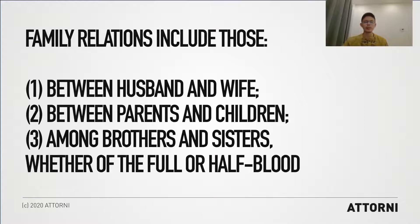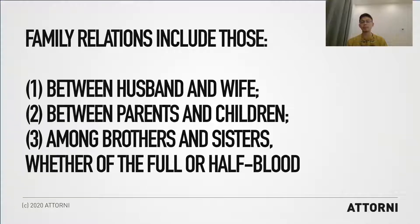Reading from Article 150 of the Family Code, family relations include those: first, between husband and wife; second, between parents and children; third, among brothers and sisters, whether full or half-blood.